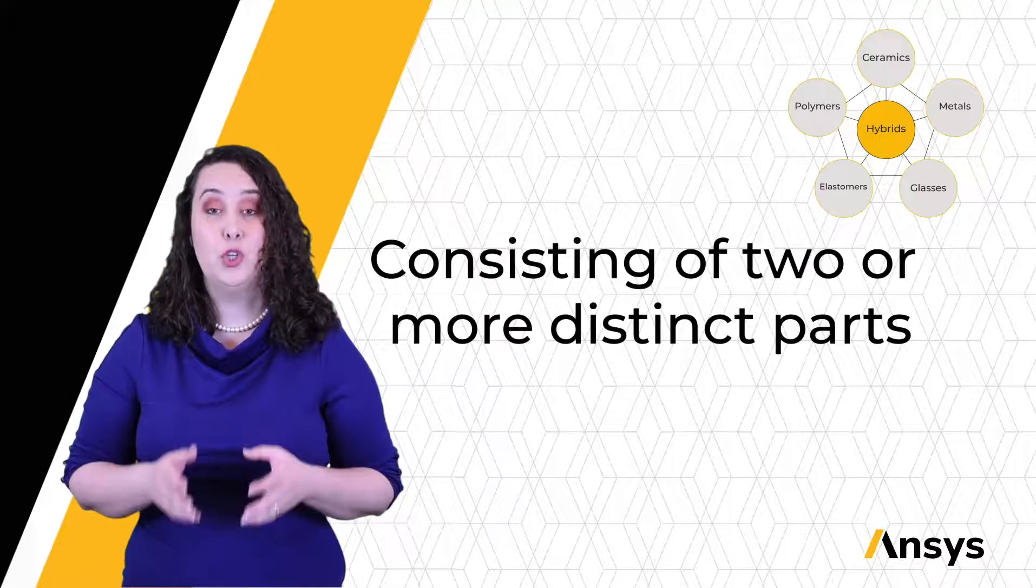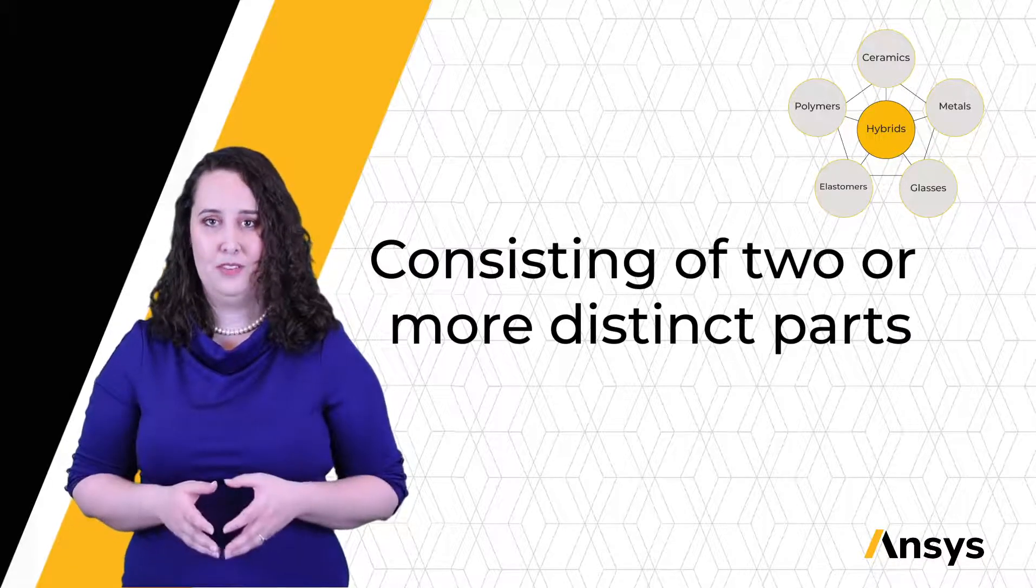Hybrids consist of both composites and foams. Composites are defined as having two or more distinct parts. Now, by this definition, metallic alloys are considered composites.